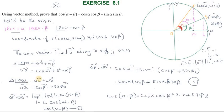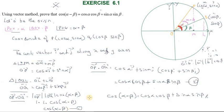So OP = cos α i + sin α j, and OQ = cos β i + sin β j. Using the dot product OP · OQ, from both forms, we get cos(α − β) = cos α cos β + sin α sin β. This completes the proof.